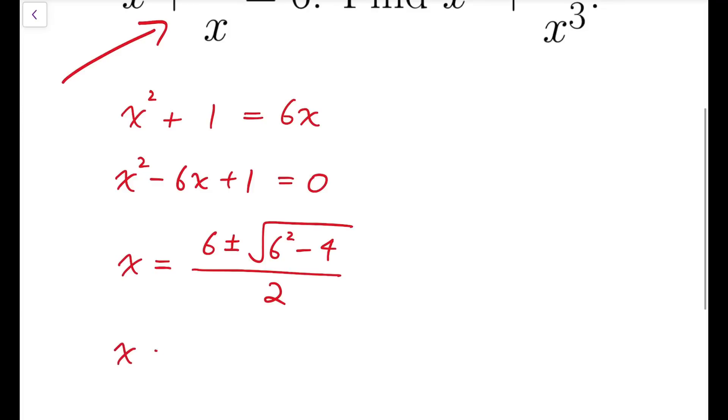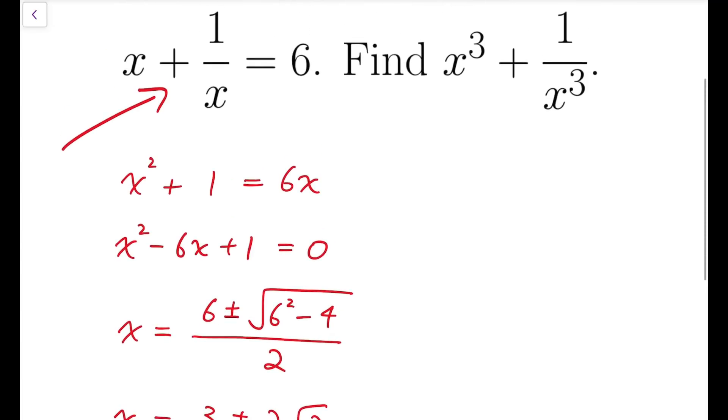and that will give me 3 plus or minus 2 times square root of 2. But when I try to use either 3 plus 2 root 2 or 3 minus 2 root 2 into finding the value of x cubed, not saying about x cubed plus 1 over x cubed, but just x cubed is going to take me a lot of time.